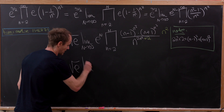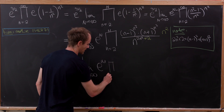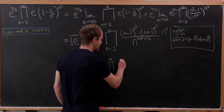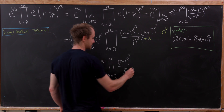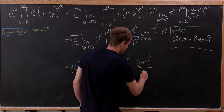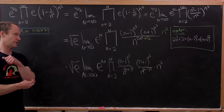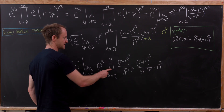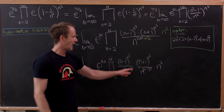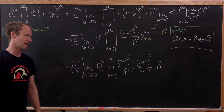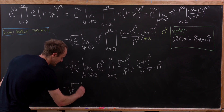So we have the square root of e, the limit as capital N goes to infinity, and the product as little n goes from 2 to capital N. We'll have n minus 1 to the n squared over n to the n plus 1 squared, times n plus 1 to the n squared over n to the n minus 1 squared, and finally an n squared left over. Importantly, the base is one less than the exponent in the first term, and one more in the second — that allows telescoping.